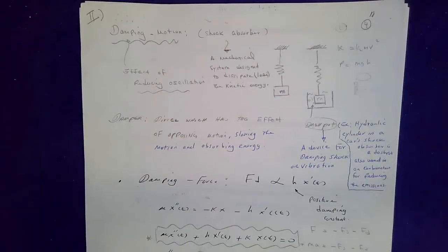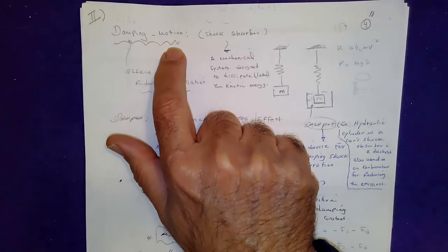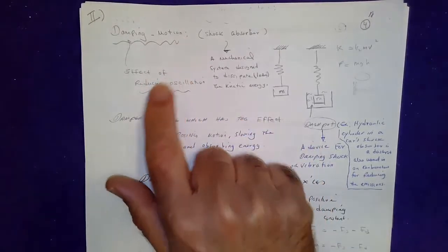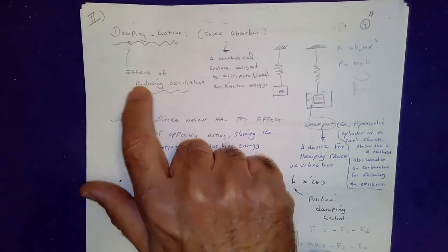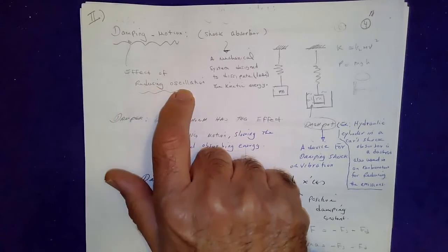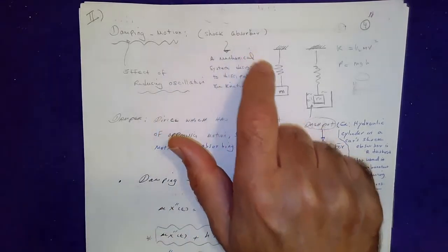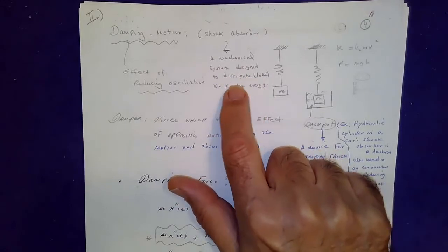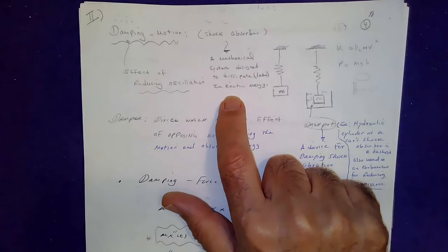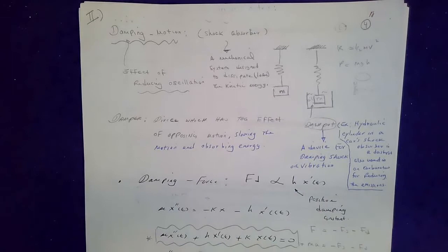Section 4.9 Mechanical Vibrations part 2. This covers damping motion. Damping is the effect of reducing the oscillation — it is the amount of force which reduces oscillation. One example of a damping force is the shock absorbers under your car, which is a mechanical system designed to dissipate or lose kinetic energy from the motion.